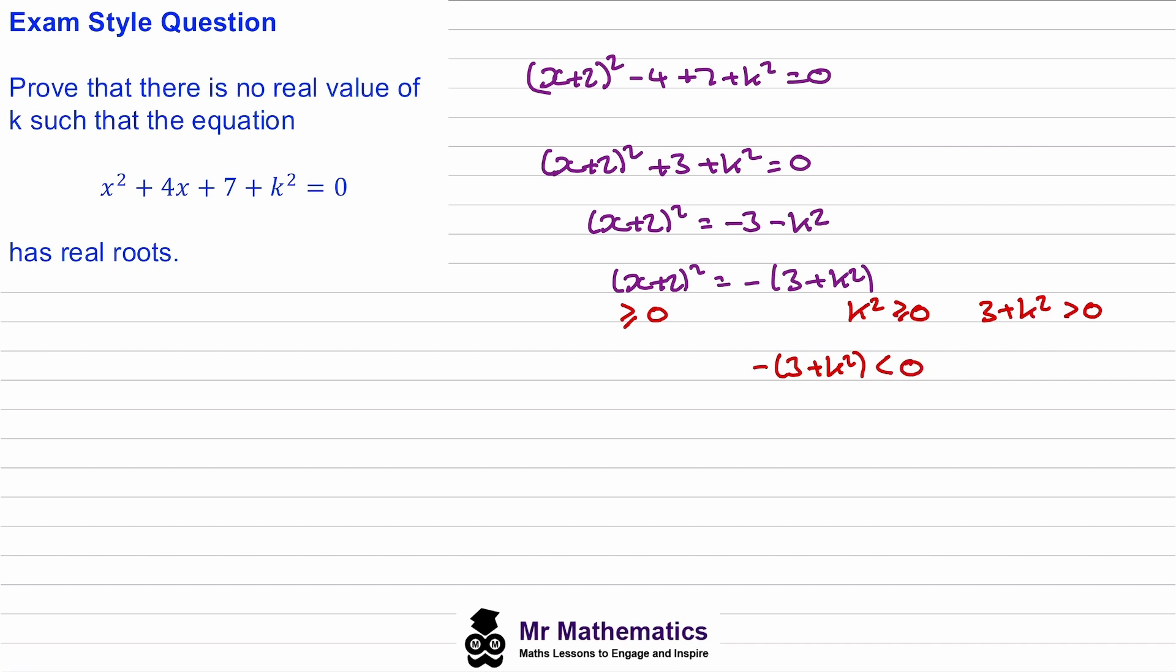So if our left hand side is greater than or equal to 0 and our right hand side is less than 0, there are no real solutions. Our conclusion then is that no real value of k for which this equation has real roots.